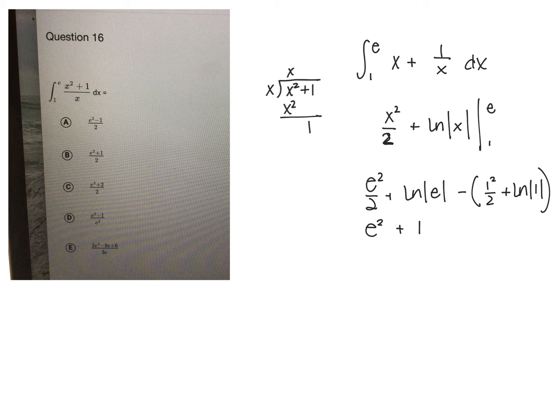So we get e squared over 2 plus 1, minus 1 half, plus 0, because the natural log of 1 is 0.